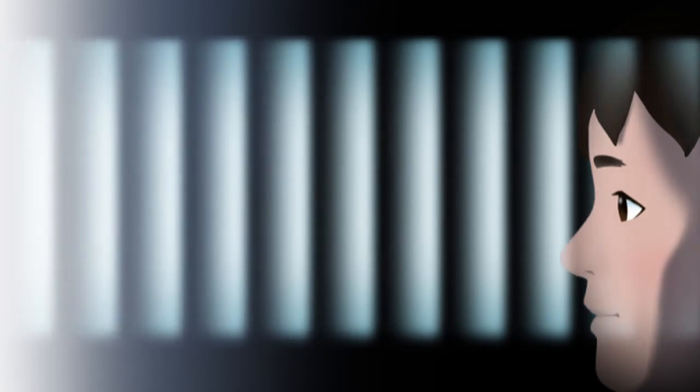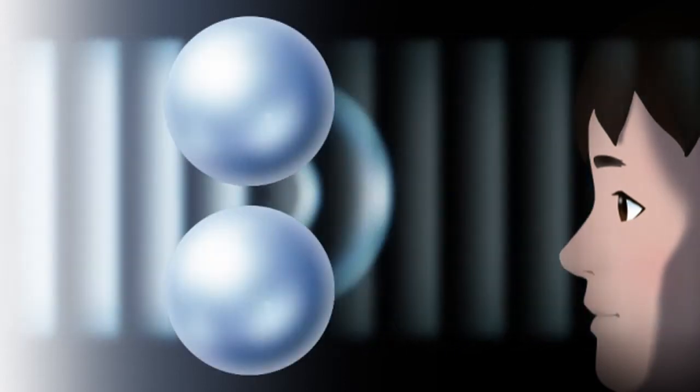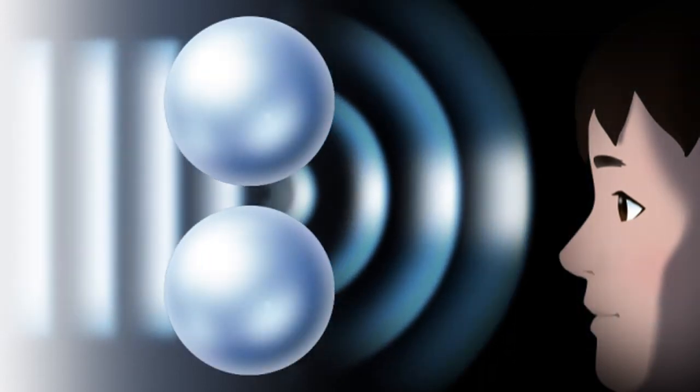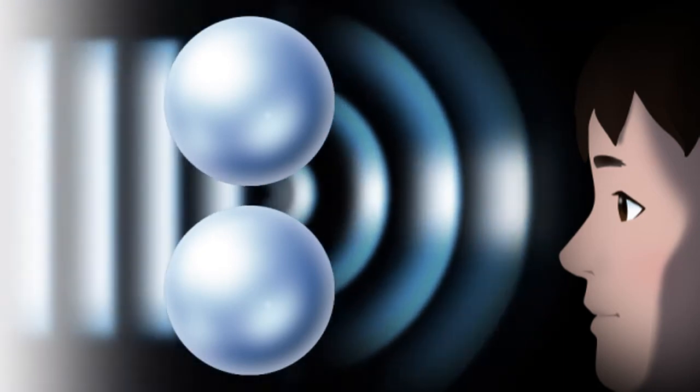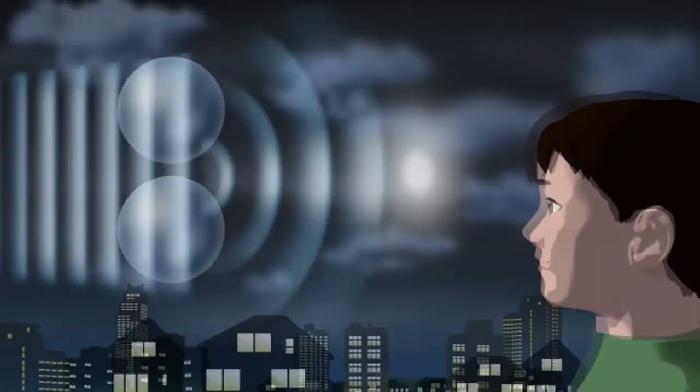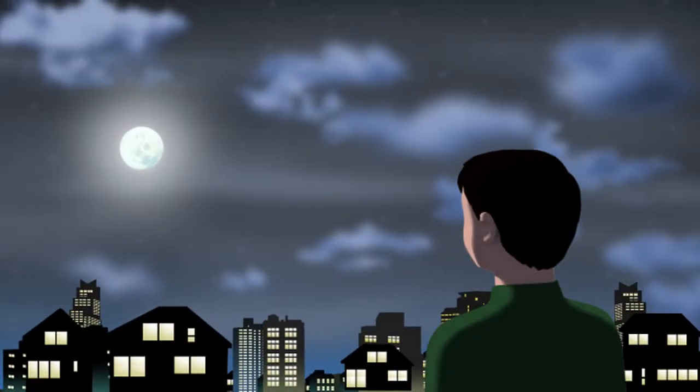Diffracted light spreads out much more than when there are no droplets in the air, so to us, the light appears much weaker. This is why the area around the moon appears blurry when the moon is covered by thin clouds.